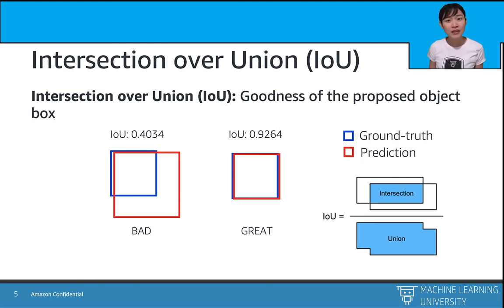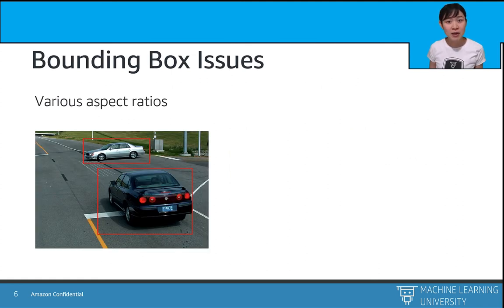However, bounding box has some issues. First, on a given image, we might have objects in different aspect ratios, such as the cars in the plot of different size and shape.